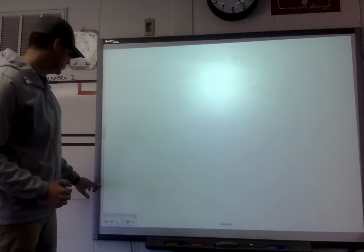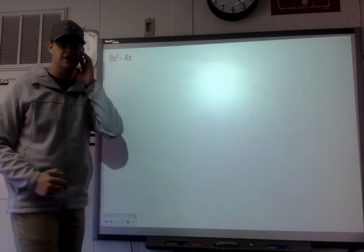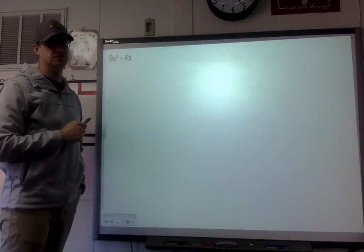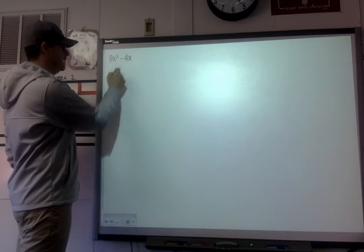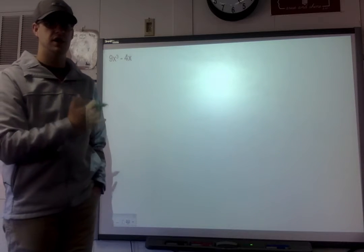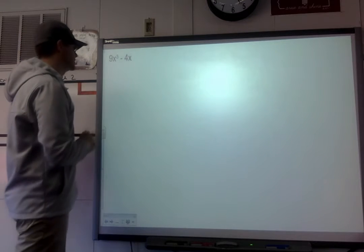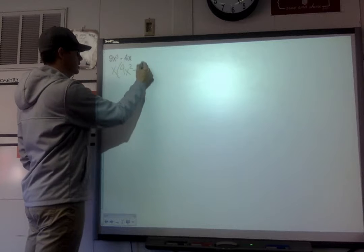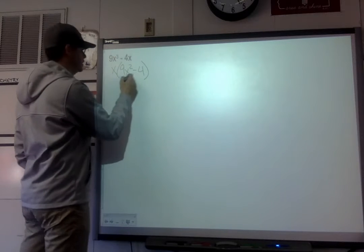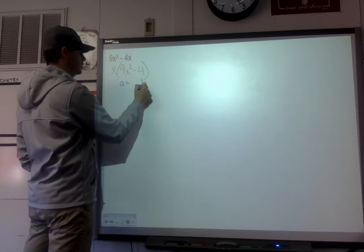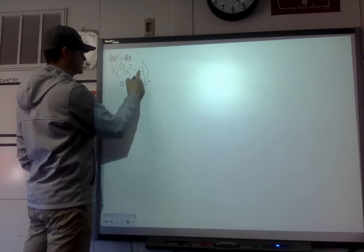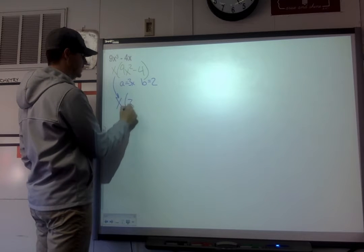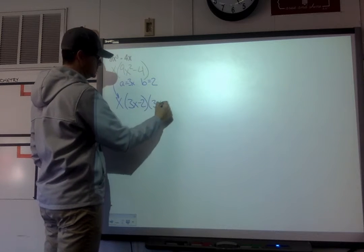The last example in this set: 9x³ - 4x. Now, 9 and 4 are perfect squares, but x³ and x are not. However, we can factor an x out of both terms first, leaving us with x(9x² - 4). Now, the square root of 9x² is 3x and the square root of 4 is 2. So the full factored form is x(3x - 2)(3x + 2).